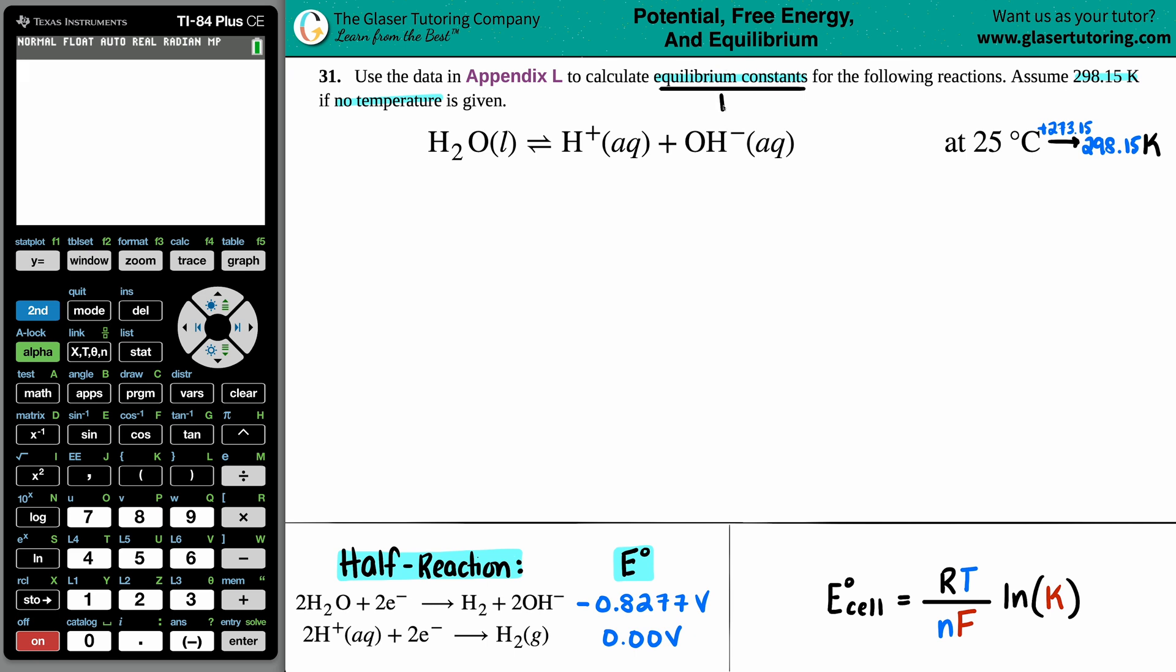Remember, equilibrium constants are capital K values. It doesn't necessarily matter what K value you're searching for. The K value that you're searching for is going to be just one single value. Now, what is in appendix L? In the textbook in which this question comes from, they're all cell potential values, which essentially you can get an E cell that's standard. This little notch means that you could find standard values.